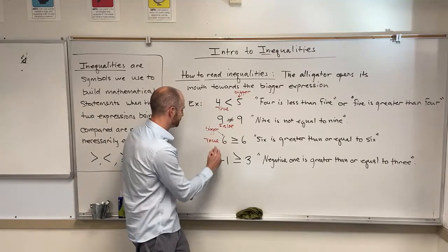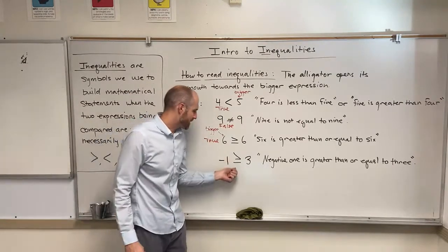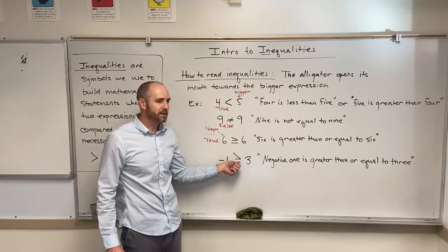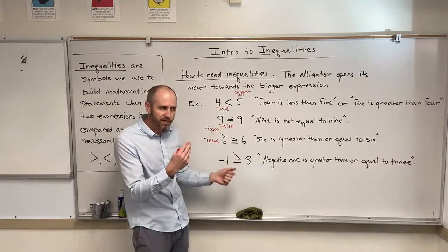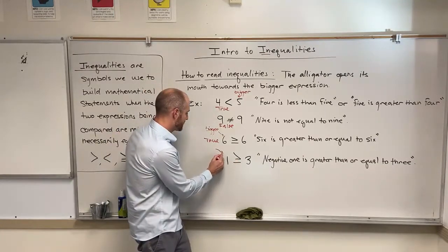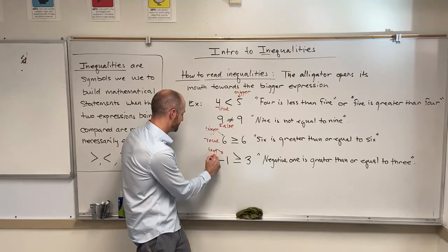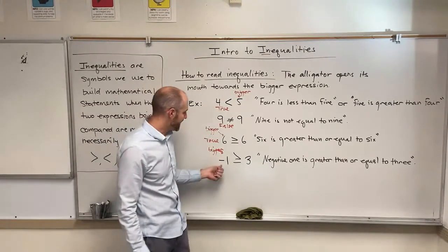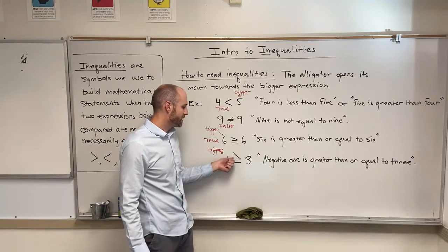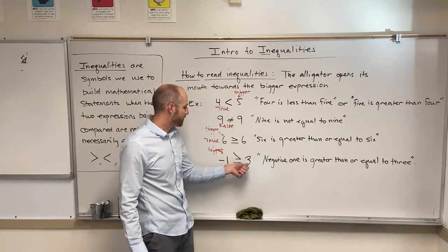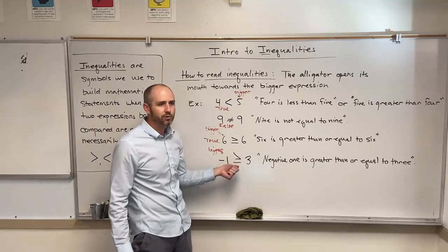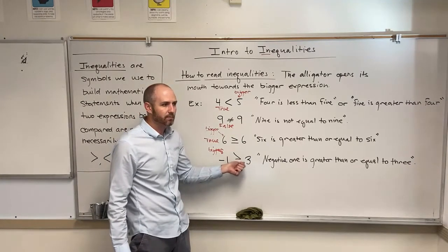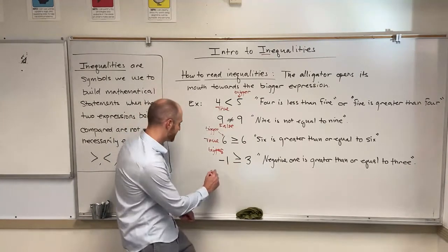The last one: negative one is greater than or equal to three. First, look at the inequality — it's telling us the left side is bigger, so we read it as: negative one is greater than or equal to three. That's not true. Negative one is not greater than three, and negative one is not equal to three, so this is a false statement.